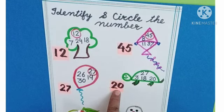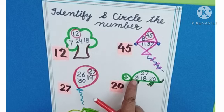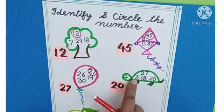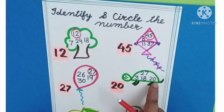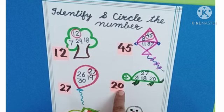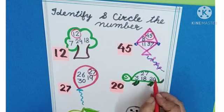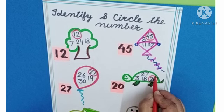Our next number is 20. Search number 20. This is number 3. Which number is this? This is 118. Where is 20? Yes, here it is. 20. We will circle number 20.